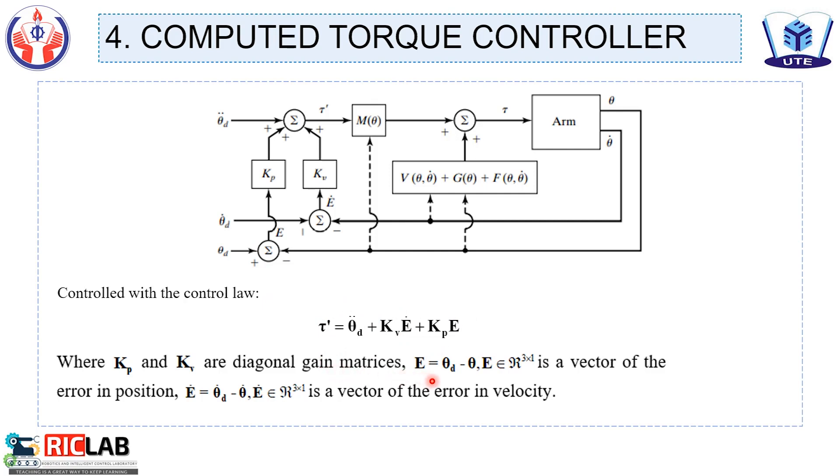E equals theta desired minus theta. E is a vector of the error in position and E dot is its derivative. E dot is a vector of the error in velocity.